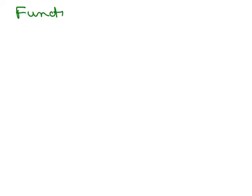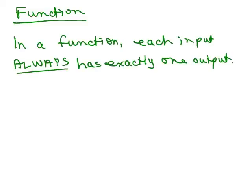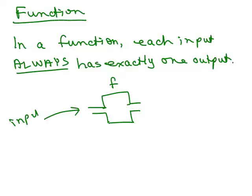Now we're going to get to the very basic idea of a function. In a function, each input always has exactly one output. You can think of there being a little function machine — if I put my input in, it does some stuff, and out pops an output. Exactly one output comes out. It's not like the next time I put in the exact same thing, something different will come out.